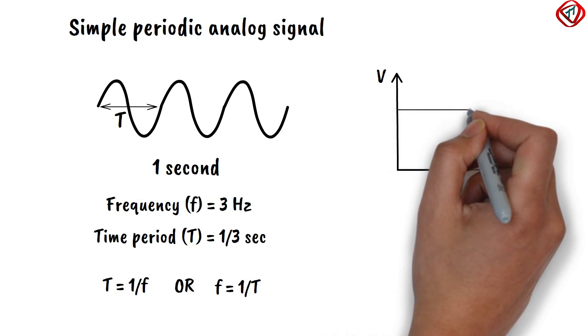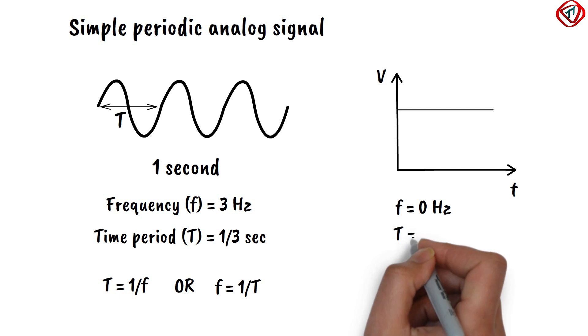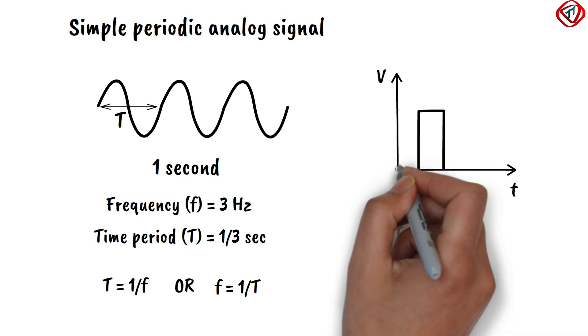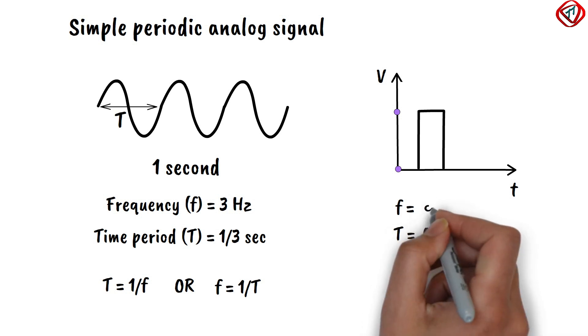If a signal maintains a constant level, then its frequency is 0 Hz and the time period is infinite. If a signal changes from one level to another level instantaneously, i.e. time is equal to zero seconds, then its frequency is infinite.